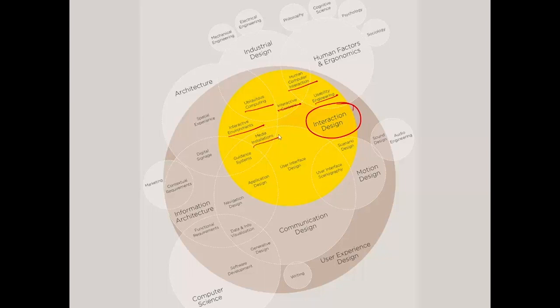Media installations use specific media like video and audio to bring interactivity into spaces. Guidance systems refer to how people find their way across environments. Application design covers the apps on our smartphones that we use daily. User interface design refers to the actual physical screen you see on devices — the icons, how you swipe across them. User interface scenography describes how scenes unfold on interfaces, and scenario design refers to how scenarios unfold over time before you actually design these products.